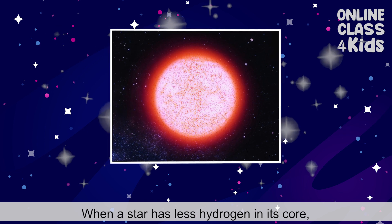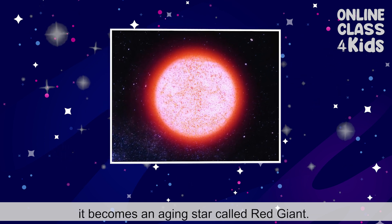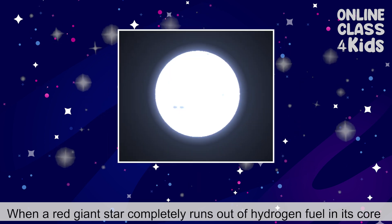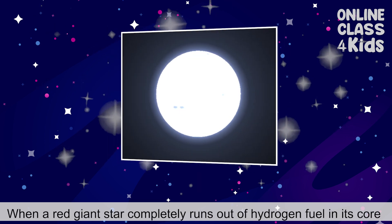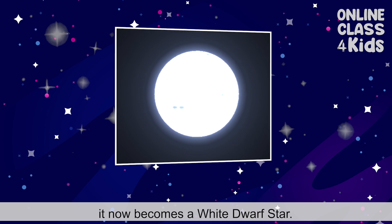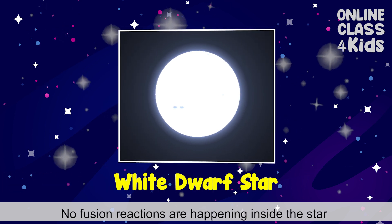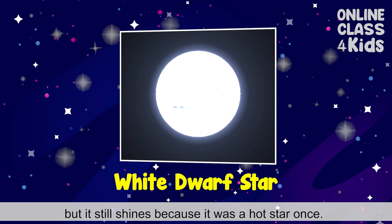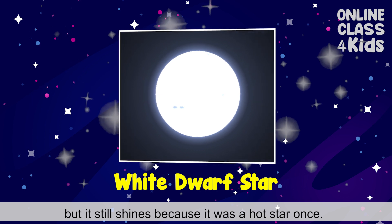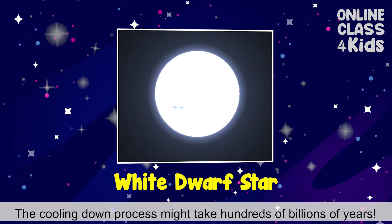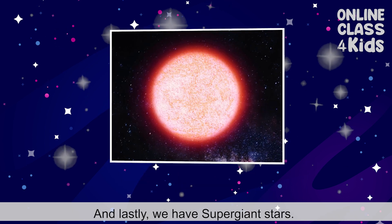When a star has less hydrogen in its core, it becomes an aging star called a red giant. When a giant star completely runs out of hydrogen fuel in its core after a few hundred million years, it now becomes a white dwarf star. No fusion reactions are happening inside a white dwarf, but it still shines because it was a hot star once. The cooling down process might take hundreds of billions of years.